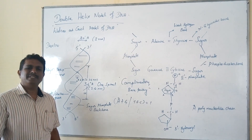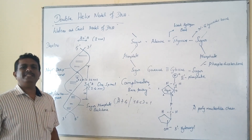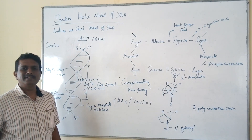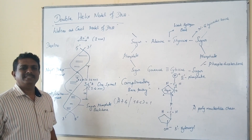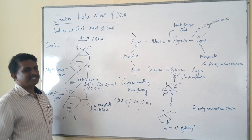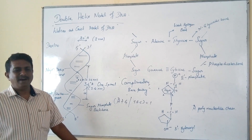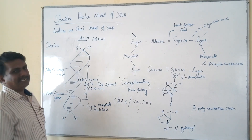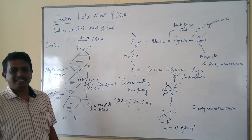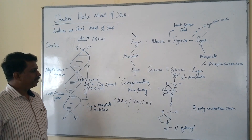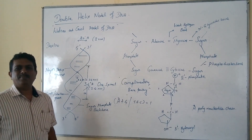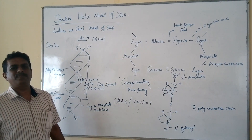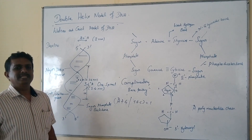Some important properties naturally seen in DNA are: it is hydrophilic in nature, it is right-handed and hence dextrorotatory in nature, and it is universally negatively charged. Watson and Crick were awarded the prestigious Nobel Prize in the year 1962 for this wonderful work. In the next class, we will discuss the central dogma of molecular biology and the central dogma of today's synthesis. Thank you.